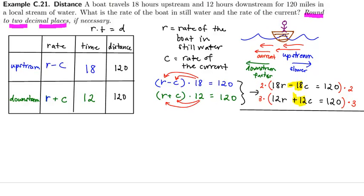Alright, so rewriting this I would have 36r minus 36c equals 240. My second equation would be 36r plus 36c equals 360. And now I can clearly see that I have the same coefficient of c but opposite signs. And now I add.